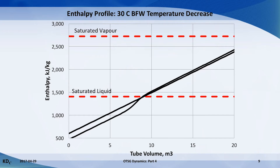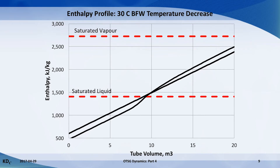This will require the OTSG to accumulate an additional 1 cubic metre of water. This also means that there will be less water available to flow downstream for keeping the radiant section cool. The cold front pushes through the boiling point and the water accumulates.